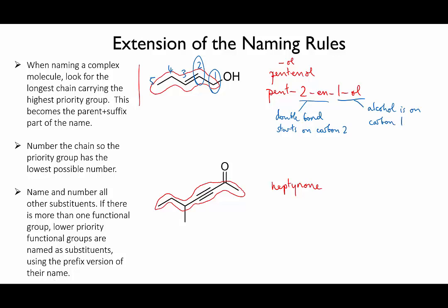Now we need to number those functional groups as before. So we start from the right, and that gives us hept-3-ine-2-one. And lastly, there's this methyl group here on carbon number five as a substituent. So we end up with 5-methyl-hept-3-ine-2-one.